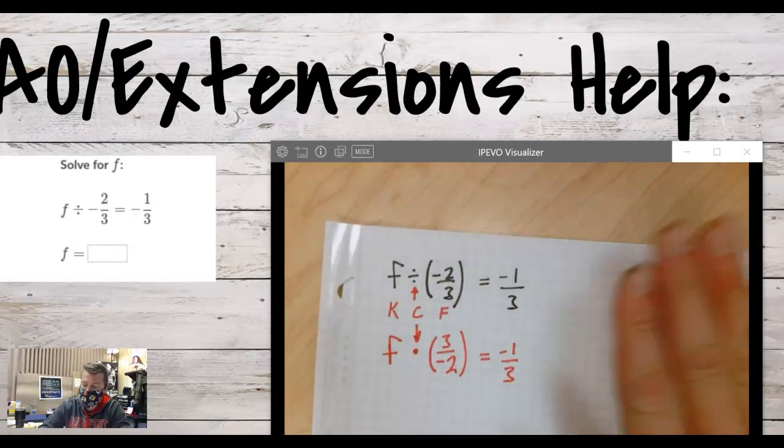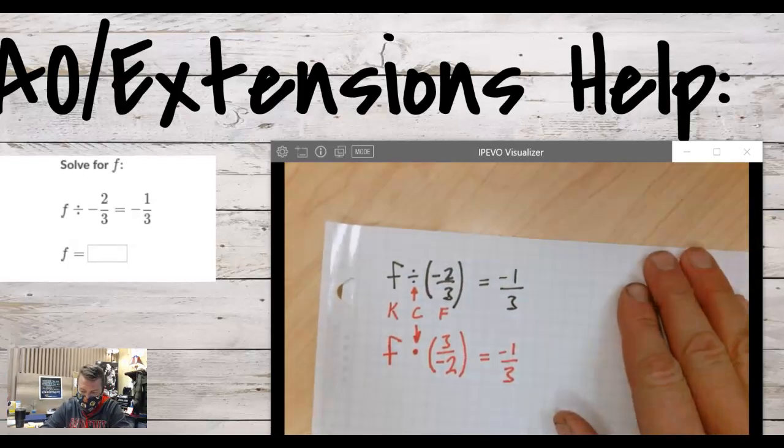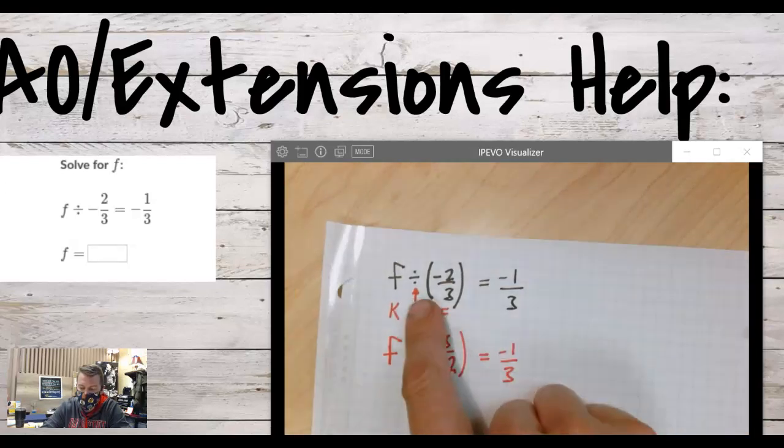Here's a problem that I've actually made a mistake on twice, like two different times, and it's because we're trying to divide by a fraction. This is really tough.